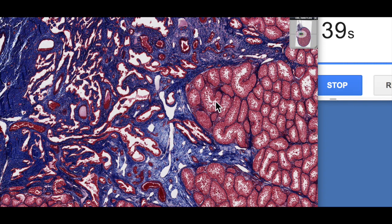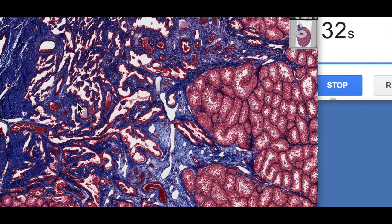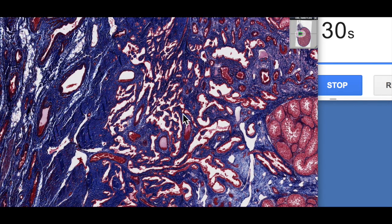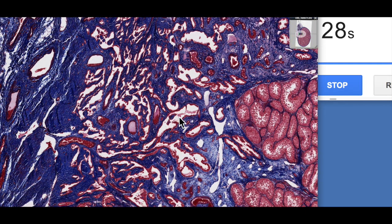From the seminiferous tubules the sperm are made. They leave via the straight tubules, these structures here, and then they enter into the rete testis before moving on to the efferent ductules. We'll talk more about the pathway of sperm in another video.